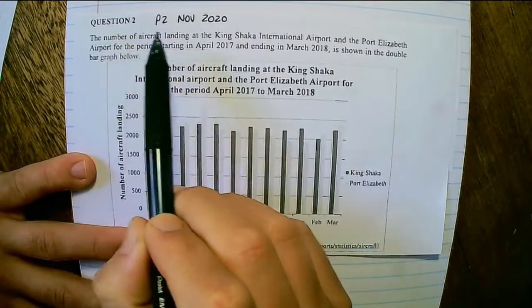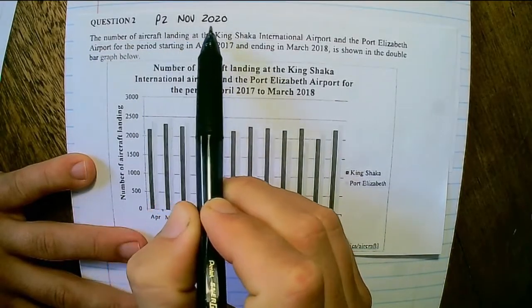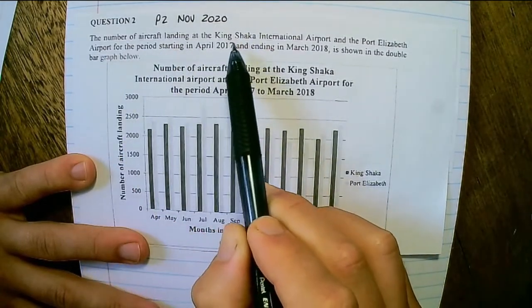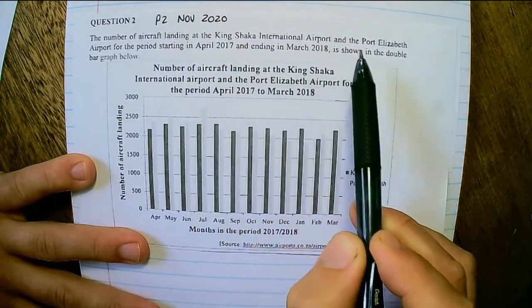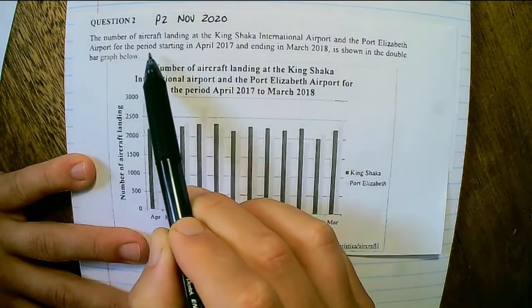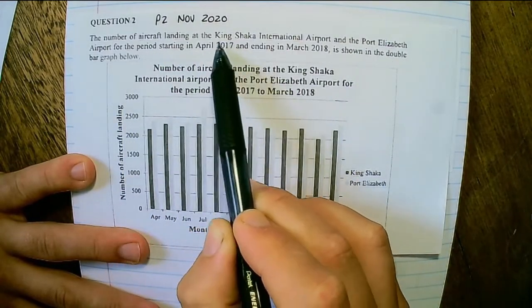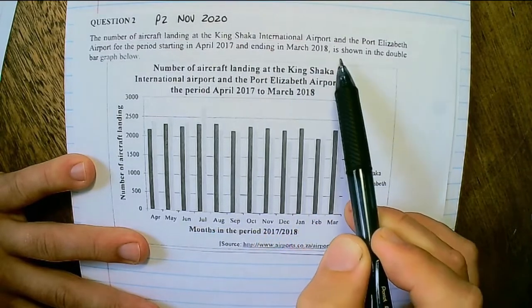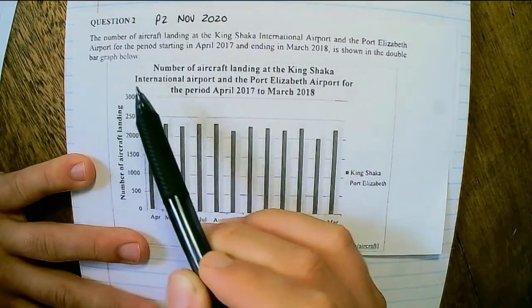This is question 2 of paper 2 November 2020. The number of aircraft landing at the King Shaka International Airport and the Port Elizabeth Airport for the period starting in April 2017 and ending in March 2018 is shown in the double bar graph below.